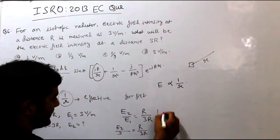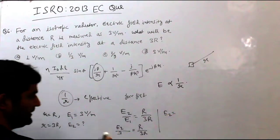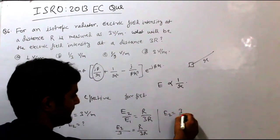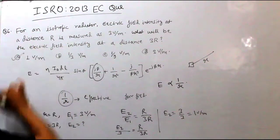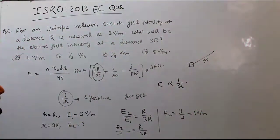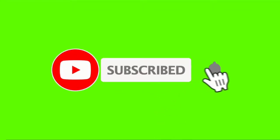So, overall, if we talk about E2 value, E2 will be equal to 3 upon 3, that is 1 volt per meter. So, 1 volt per meter, this answer will be equal to 1 volt per meter.